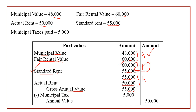We have calculated gross annual value. After calculating gross annual value, deduct municipal tax. In the question, the municipal tax is 5,000, so we are deducting it and bringing the answer to the outer column. This answer is called annual value. The calculation is very simple: compare four values — municipal value, fair rental value, standard rent, actual rent. When comparing with standard rent, take the least value; otherwise, take the highest value. The result is gross annual value. Deduct municipal tax to get annual value. You must follow this order: municipal value, then fair rental, then standard rent, then actual rent.